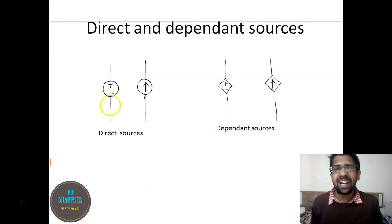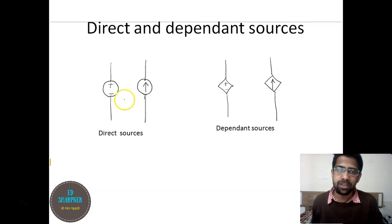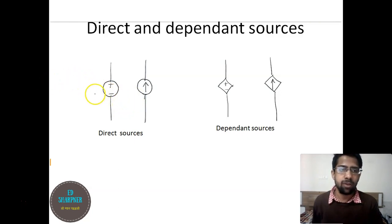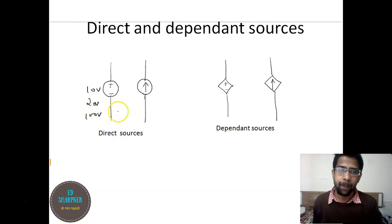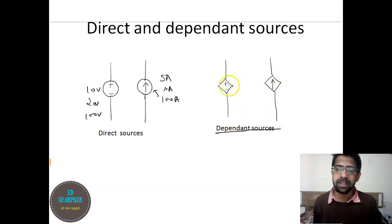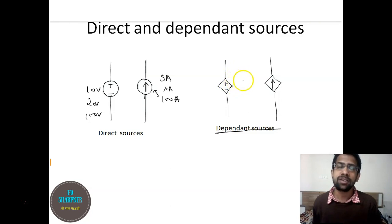When solving a circuit for unknown values of current, voltage, or passive elemental values, you come across direct sources and dependent sources. A direct source is a fixed value source — you can write 10 volts, 20 volts, or 100 volts; it won't depend on any other factor. Similarly for a current source, you will have fixed values like 5 ampere or 10 ampere. In the case of dependent sources, shown in a diamond shape, the values depend on some other variable in the circuit.